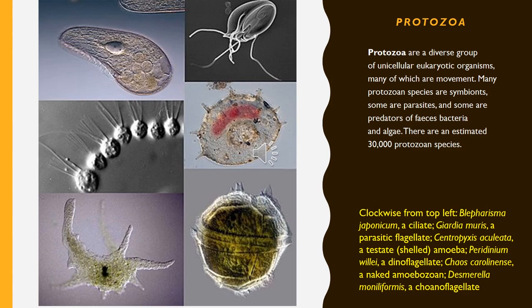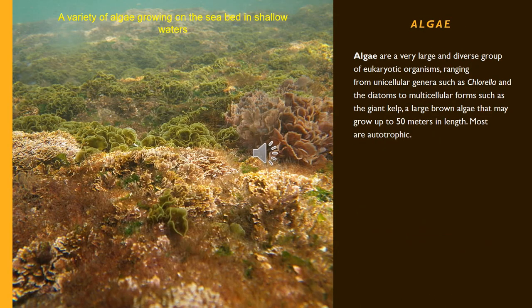Protozoa are a diverse group of unicellular eukaryotic organisms, many of which are motile. Many protozoan species are symbionts, some are parasites, and some are predators of bacteria and algae. There are an estimated 30,000 protozoan species.